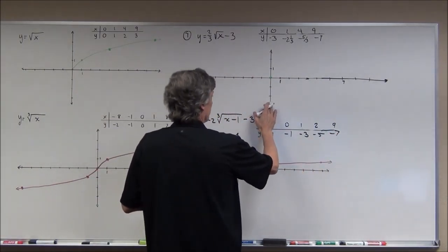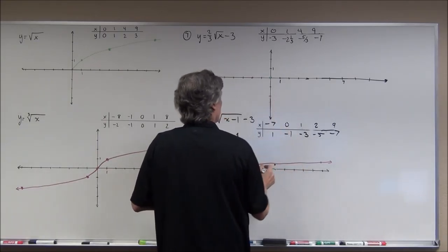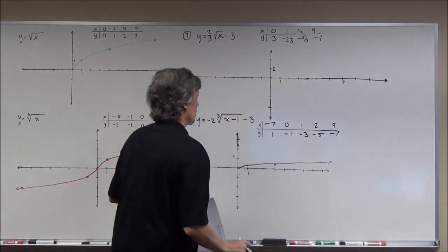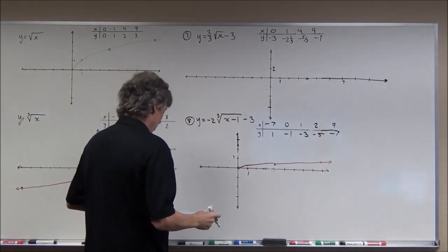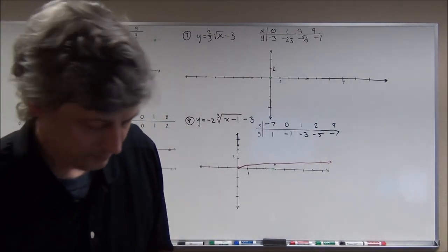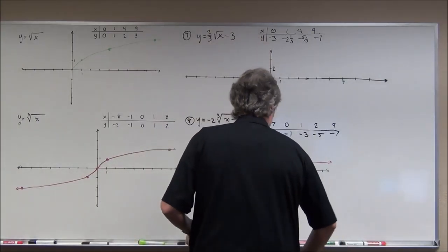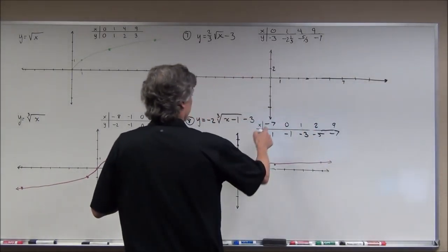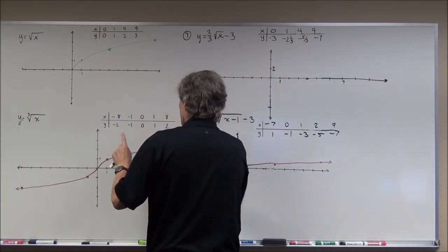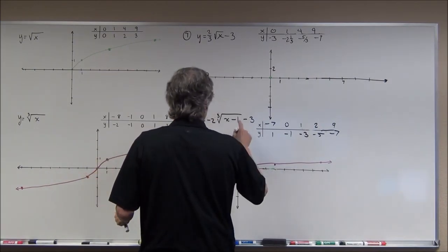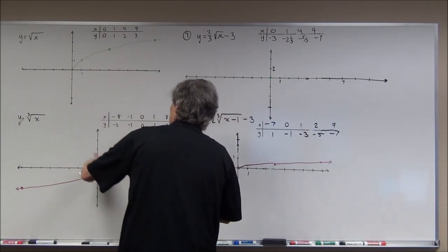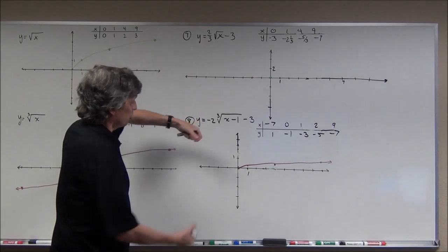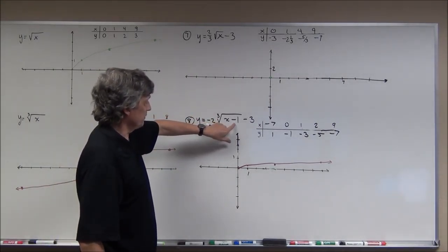My graph may not go far enough down, so I'll make each tick mark worth 2. Graphing those five points using purple: (−7, 1), (0, −1), (1, −3), (2, −5), and (9, −7). Remember: because of the negative it's going to be flipped — it goes up to the left and down to the right, stretched by a factor of 2, shifted right 1 and down 3.